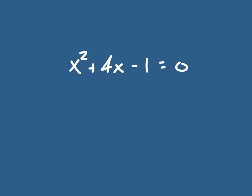We want to solve this by completing the square. This is a non-factorable quadratic — I can't factor this. There is a solution, however, I just can't factor it. So you always look to see if you can factor, and in this case I can't, so I have the option to do this by completing the square.